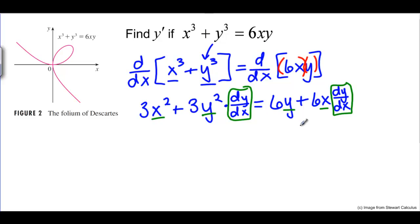Let's move all the dy/dx's to the left side. That means we would have the 3y squared that we'll keep over here. We're going to move this 6x dy/dx over to the left side by subtracting it from both sides of the equation.